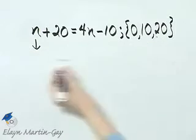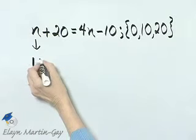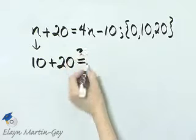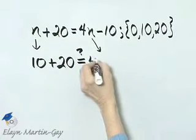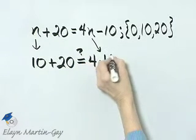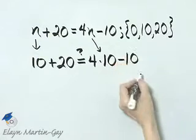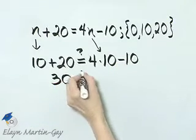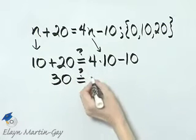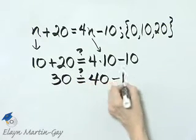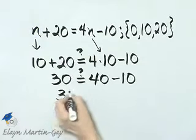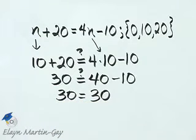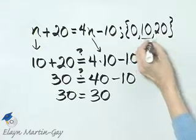Let's try our next number, 10. So everywhere there's an n, I'll replace n with 10. Is that equal to four times? This time we're replacing by 10. Let's see, 10 plus 20 is 30. Is that equal to four times 10 is 40 minus 10? I have 30 equal to 30. That is certainly a true statement. What does that mean so far?